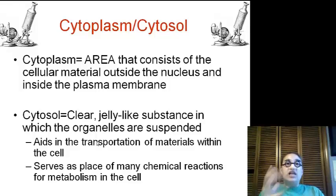Now again, that jelly-like substance that is in the cytoplasm, that sort of holds all the organelles in place and holds everything where they're supposed to be, is called the cytosol. It is a clear jelly-like substance in which all the organelles are suspended, aids in transport of material, and serves as a place for many chemical reactions to occur, especially for metabolism inside of our cells.